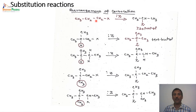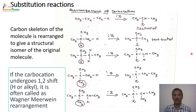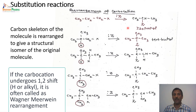Now, the next important thing is Rearrangement of Carbocations. Even though we had seen only one type of carbocations — the Tertiary Carbocation — here we have other examples of ways by which rearrangement of carbocations actually occurs. Let us take one example: the propyl one. When propyl halide is reacted with a nucleophile, it gives an isopropyl derivative. So n-propyl is a straight chain, and this becomes a branched one. That is what is called the Rearrangement of Carbocations.